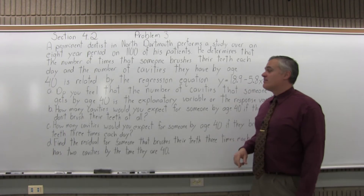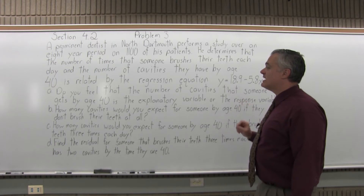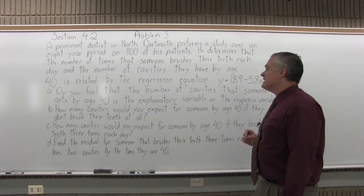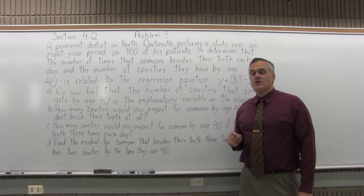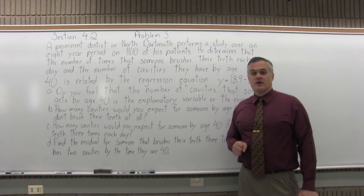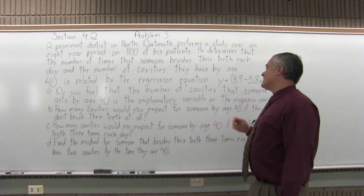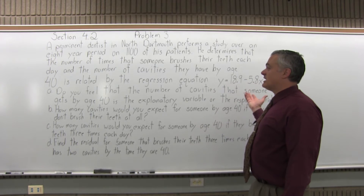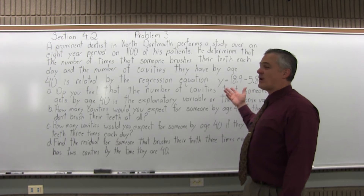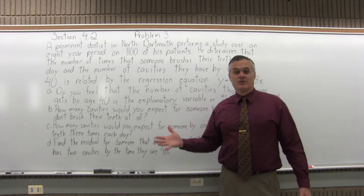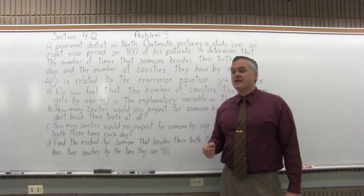Part A: do you feel that the number of cavities that someone gets by age 40 is the explanatory variable or the response variable? What they're asking is: is the number of cavities by age 40 what you put in for x to get a y value, or is that the y value you're getting out after you put in an x?